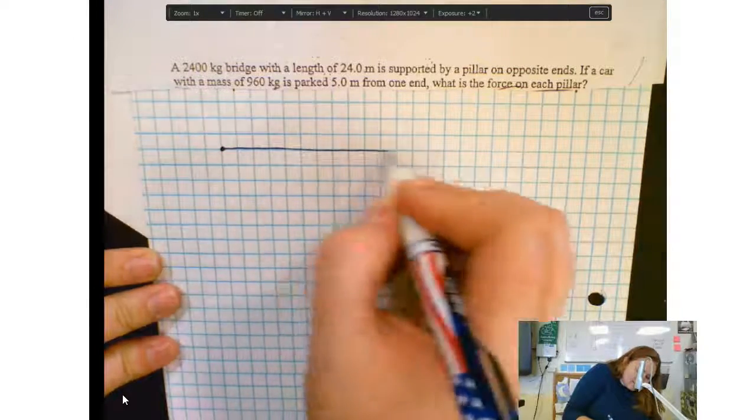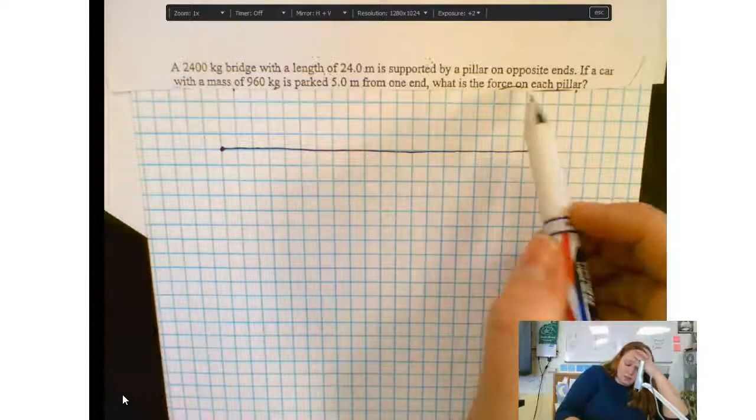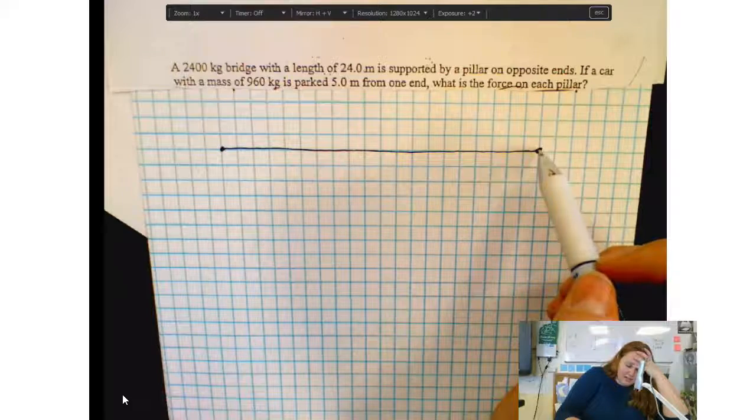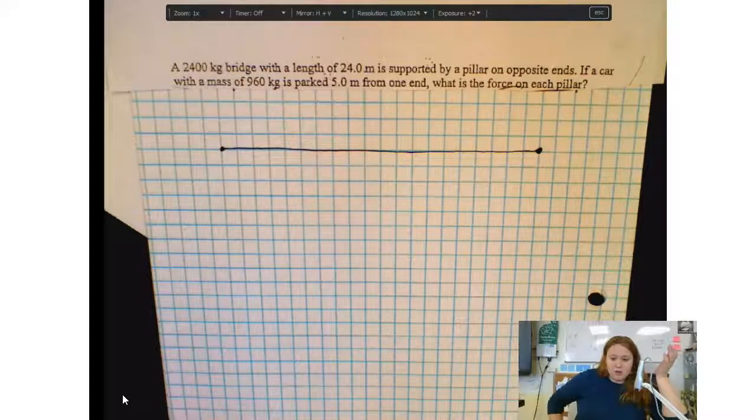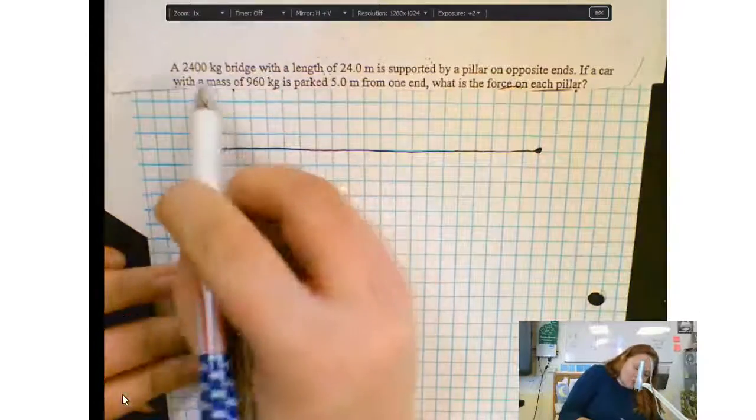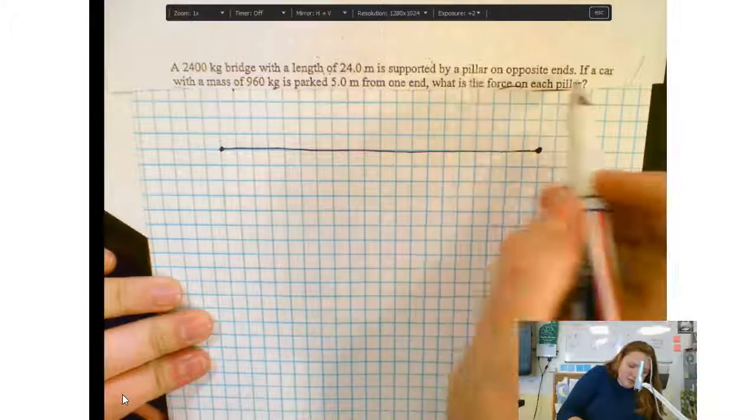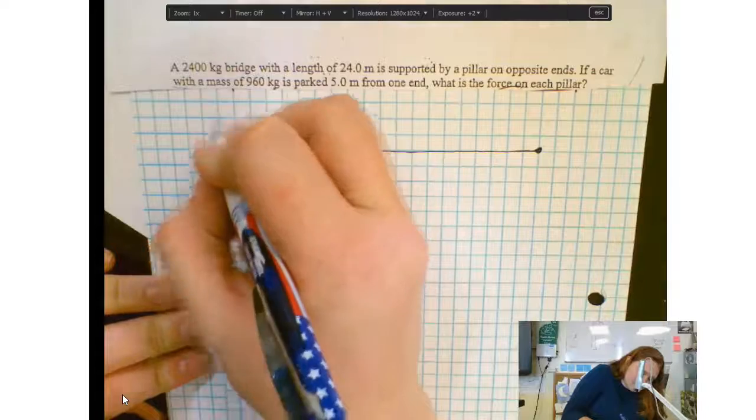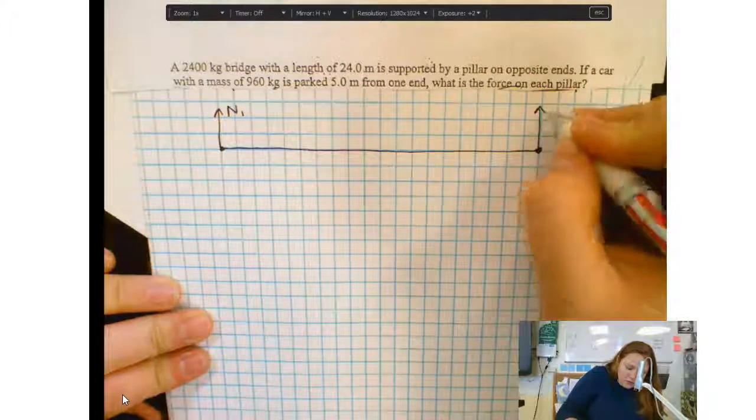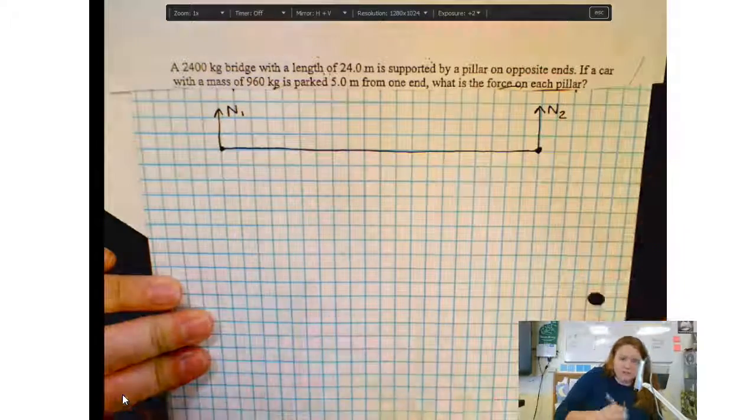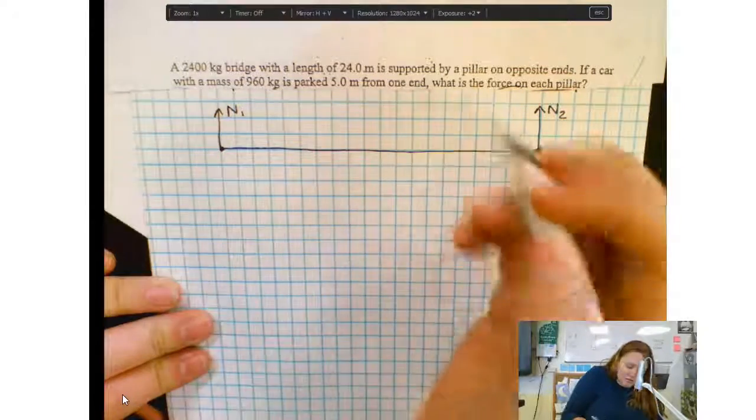So it's basically asking me to find the normal force provided by each pillar. Now, I know that because the force on the pillar is going to be the same as the pillar on the bridge. So the pillar on the bridge, that is asking for the normal force. So I'm going to go ahead and draw my free body diagram here. It says the pillars on opposite ends. So there's a normal force provided by the pillar on the left end and a normal force provided by the pillar on the right end. And those normal forces are not equal.